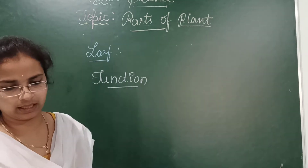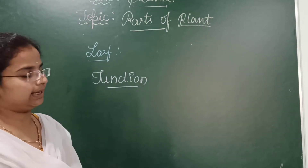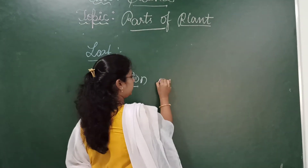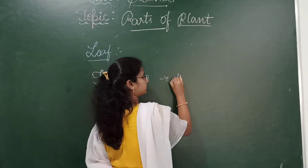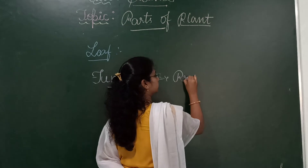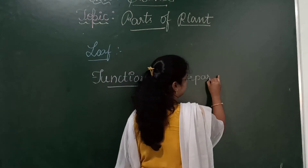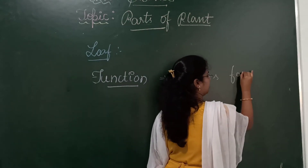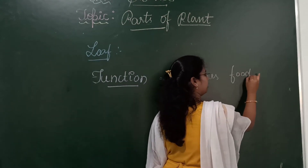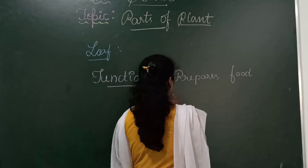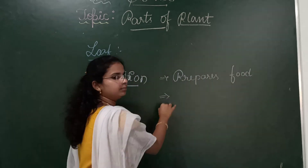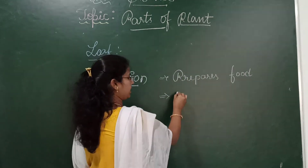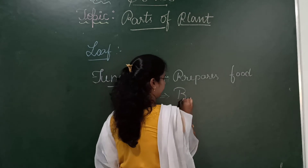The functions of the leaf are: it prepares food, and it helps plants for breathing.